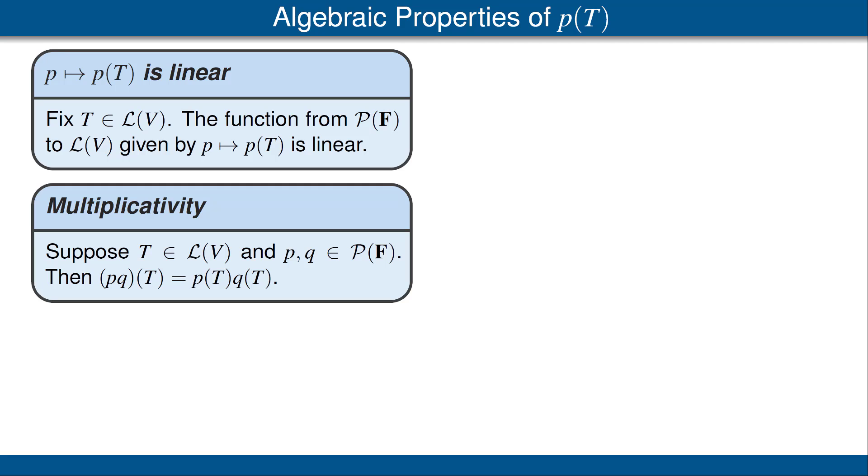Our next result is similar, but it focuses on multiplicative properties. This result says that if T is a linear operator on V, and p and q are polynomials with coefficients in the scalar field F, then pq applied to T is the same as p of T times q of T.